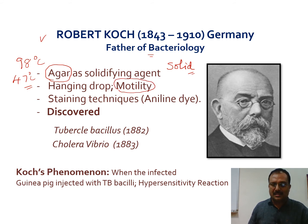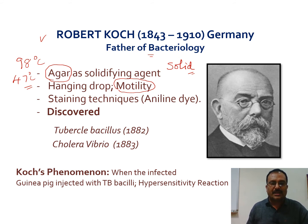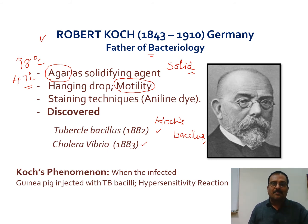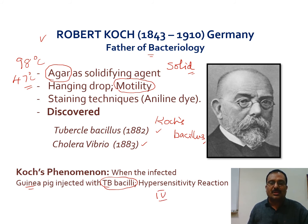Koch discovered many staining techniques to identify the arrangement, size, shape, and morphological features of microorganisms. Using all his techniques, he discovered the tuberculosis bacillus in 1882, also known as Koch's bacillus. He also identified Vibrio cholerae. He demonstrated that injecting infected guinea pigs with tuberculosis bacilli produced a hypersensitive reaction — considered a type 4 hypersensitivity reaction — now known as the Koch phenomenon.